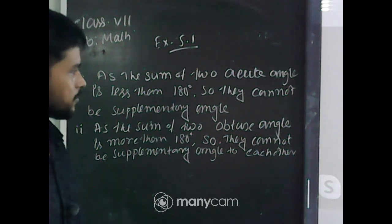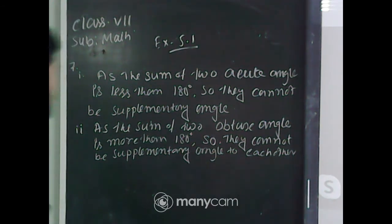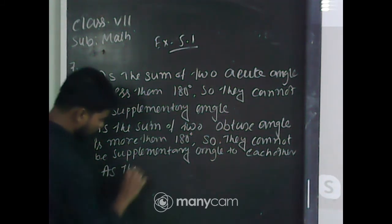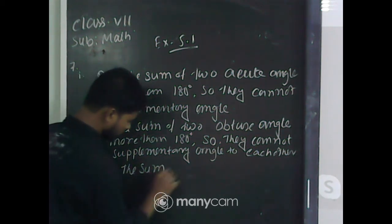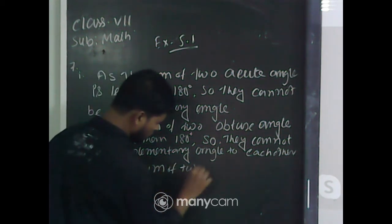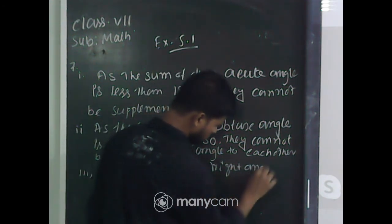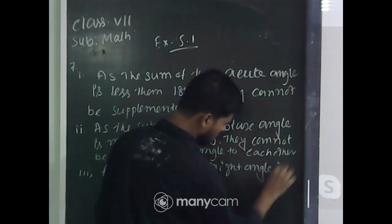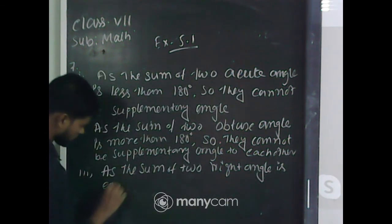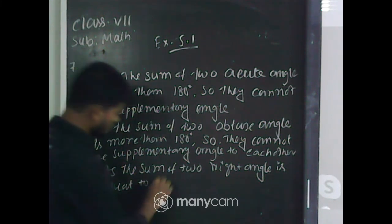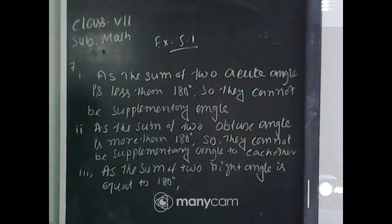As the sum of 2 right angles is equal to 180 degrees, that means 2 right angles are supplementary angles to each other. This question is complete.